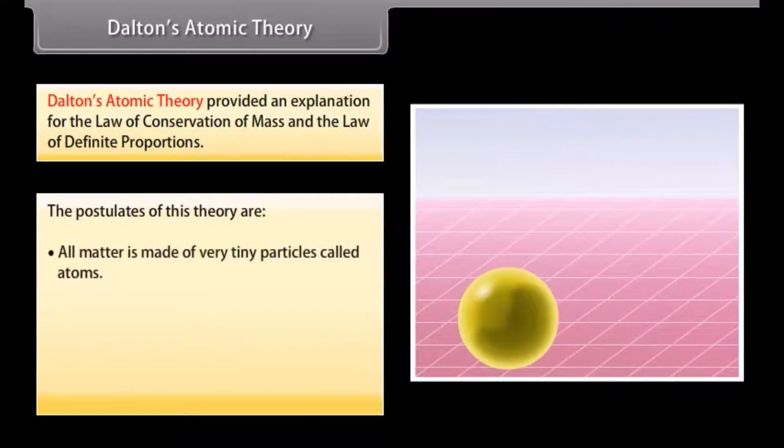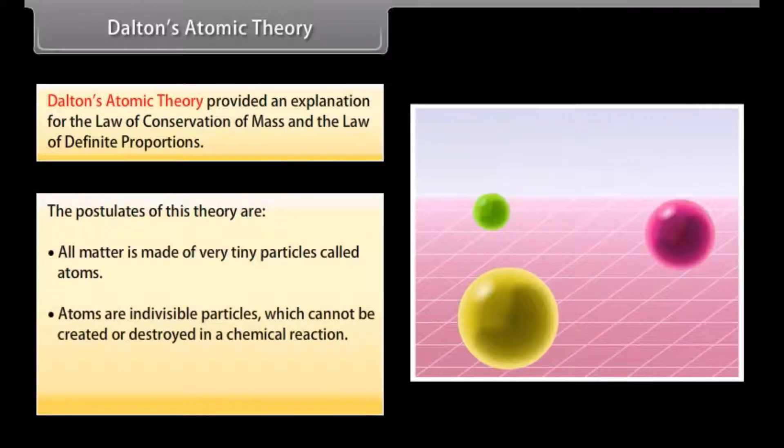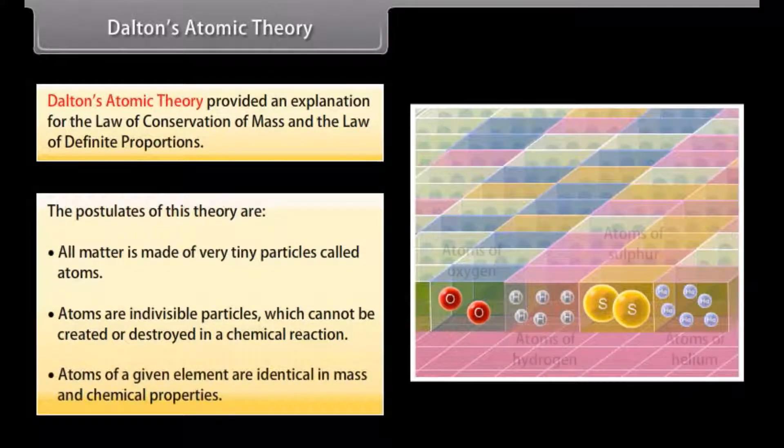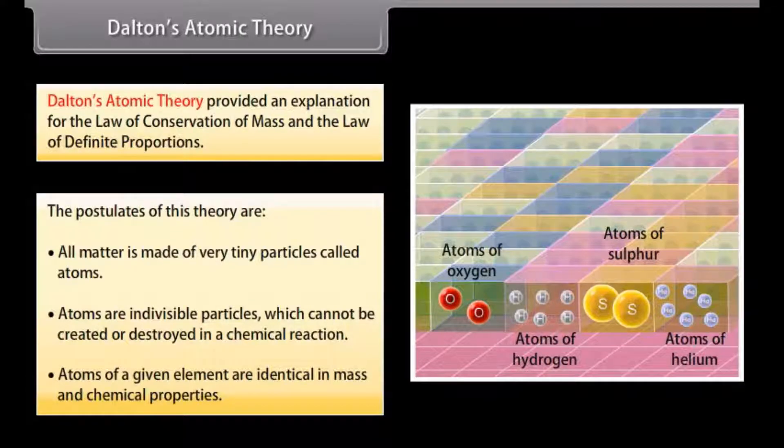1. All matter is made of very tiny particles called atoms. 2. Atoms are indivisible particles which cannot be created or destroyed in a chemical reaction. 3. Atoms of a given element are identical in mass and chemical properties.